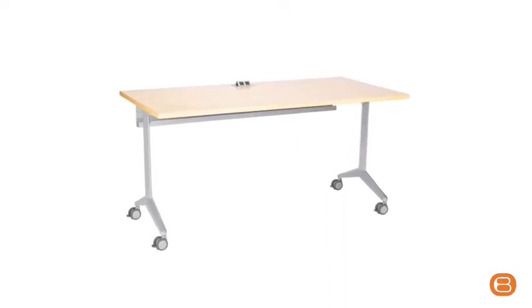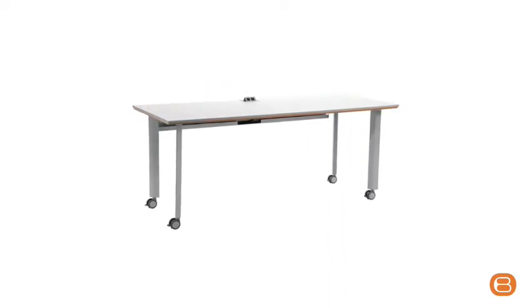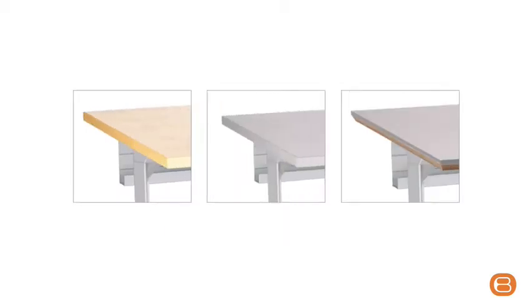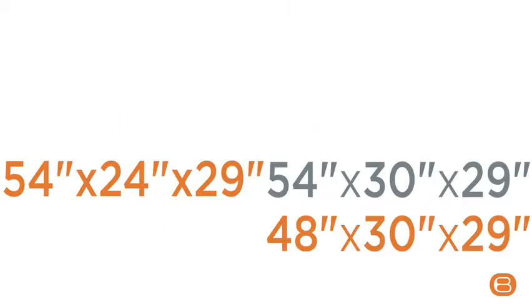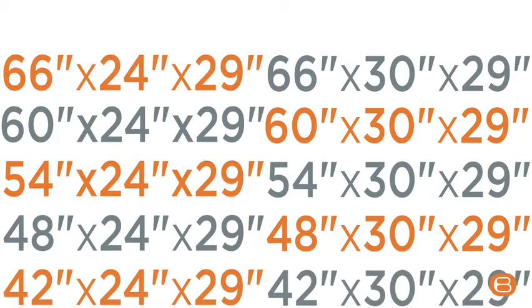ROMBY comes in T-base folding and four-leg fixed tops in both laminate or veneer. Three different edge options and twelve different table sizes add to ROMBY's design versatility.